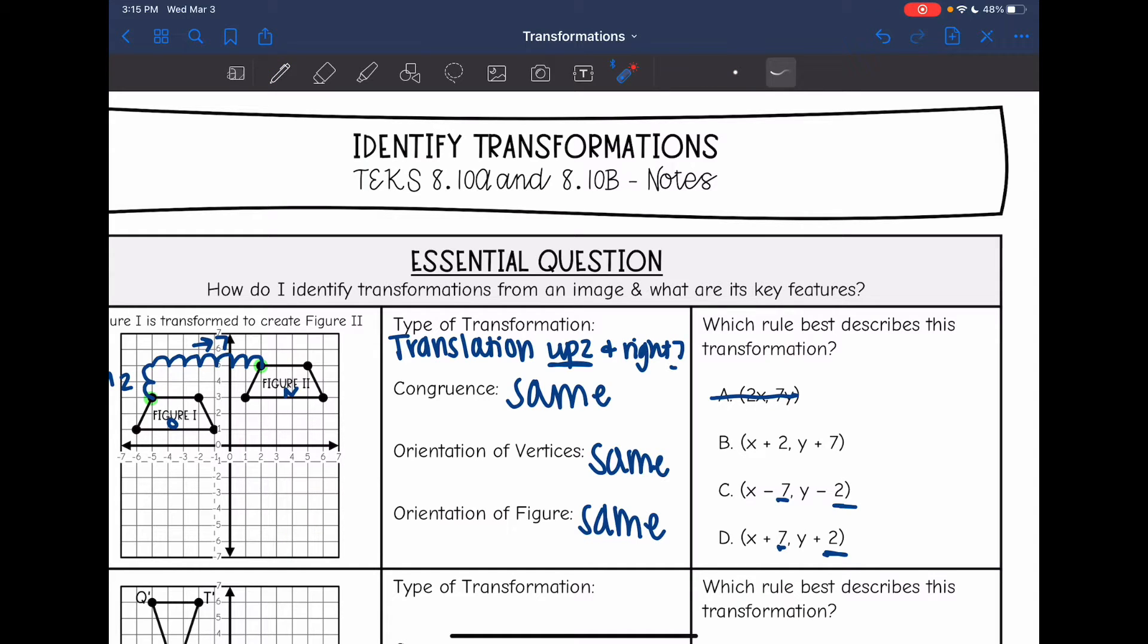Up two is increasing and right seven is also increasing. So this answer would be D, where we add to both the x and the y value that shows right seven and up two.